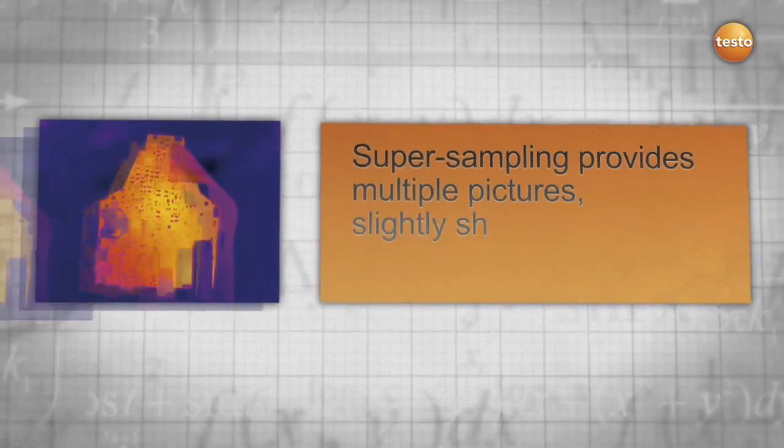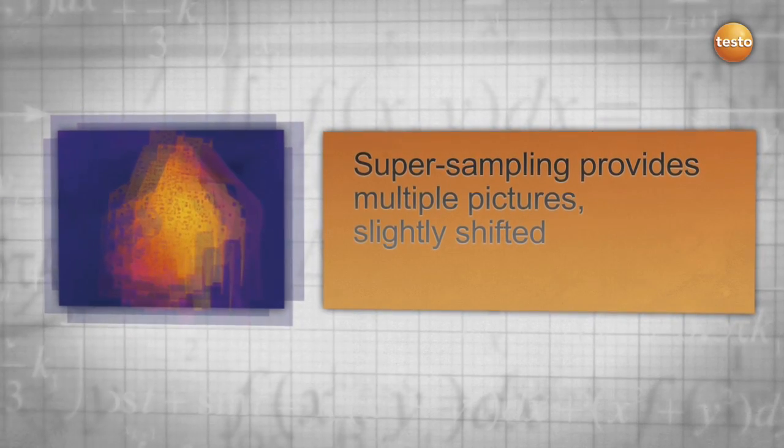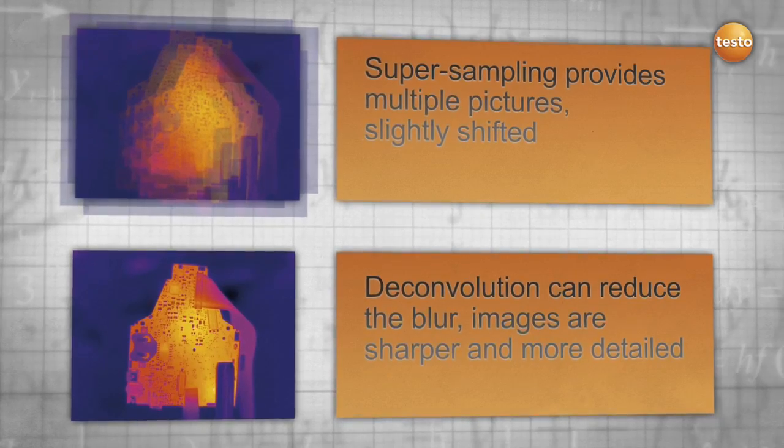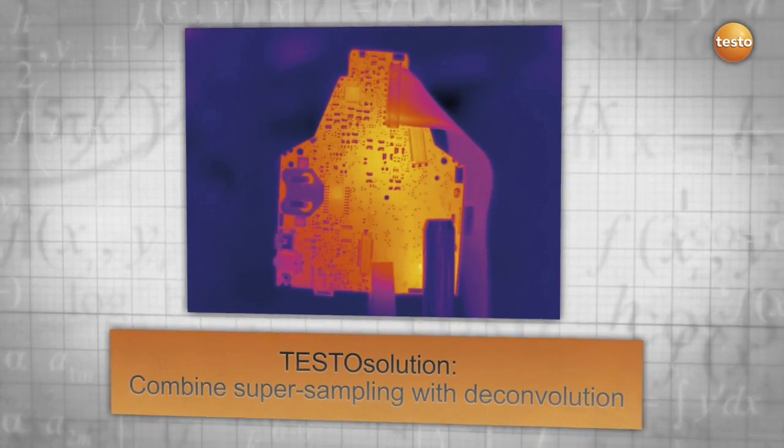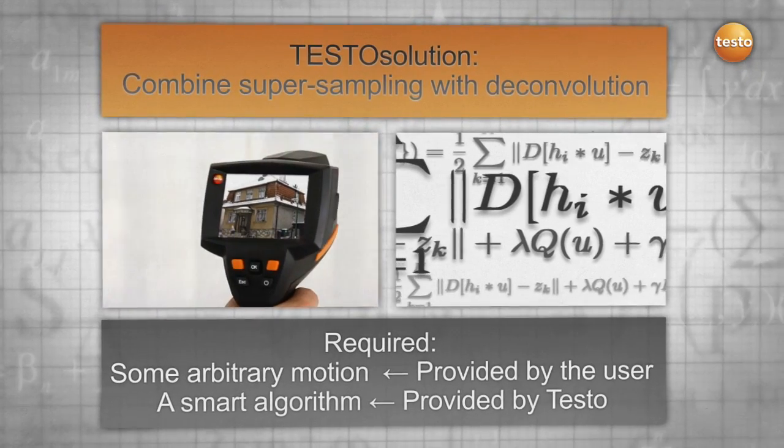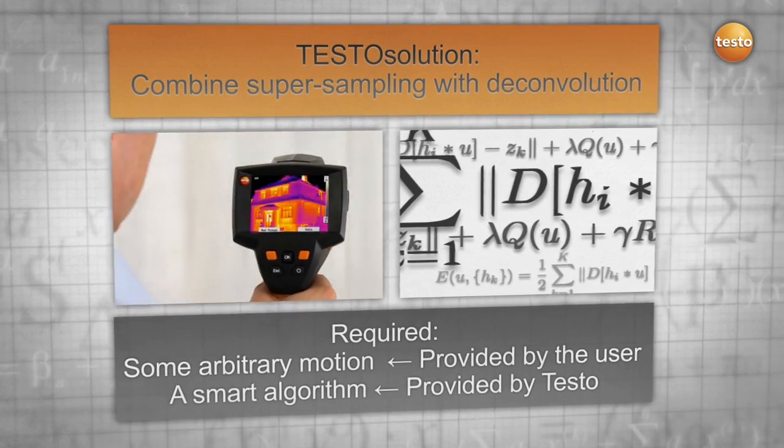The result: super sampling can take multiple images slightly shifted, while deconvolution reduces the blurriness. The combination of both is a Testo solution. All we need is the natural movement of your hand and a smart algorithm provided by Testo.